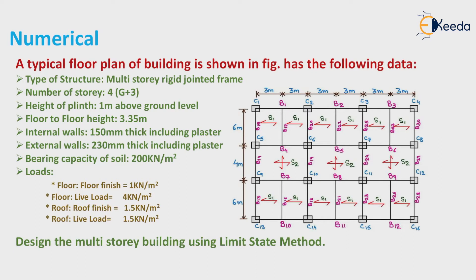Loads: floor finish equals 1 kN per meter square, floor live load equals 4 kN per meter square. Roof finish equals 1.5 kN per meter square, roof live load equals 1.5 kN per meter square. Design the multi-story building using LSM — limit state method.